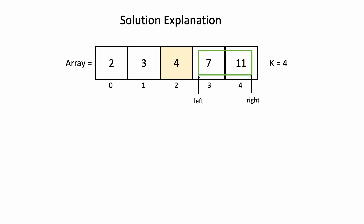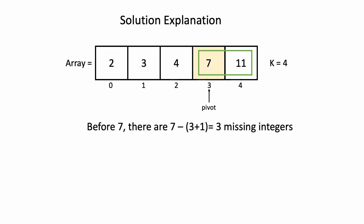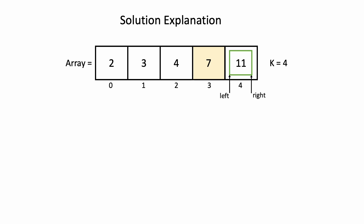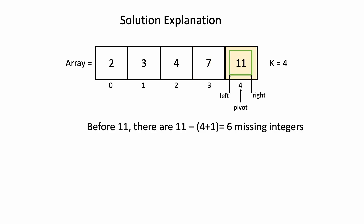We contract our search window and pick the middle element as the pivot. We compute the missing integer information based on the index — before 7, there are 3 missing integers. Because we want to find the 4th one, we direct our search to the right again. We contract the window, pick the middle element as pivot, and now there are 6 missing integers before element 11. We want the 4th one, so we direct our search to the left.